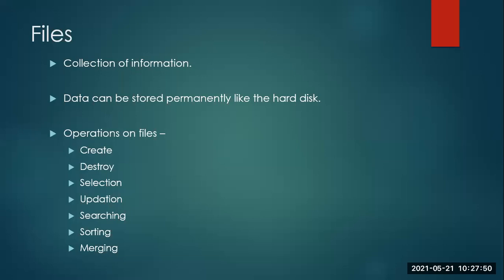Similarly, relating to programming and data structures, a file is a collection of information. When we talk about files, whatever data you store inside, it can be stored permanently — by permanently I mean stored on the hard disk. You have two kinds of memories in computers: primary memory and secondary memory, or volatile and non-volatile memory. When making use of a file, the data is stored permanently on the hard disk, and until you delete it, it will always be there.